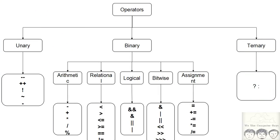Operators are basically classified into three parts: unary, binary, and ternary. Unary basically acts on a single variable, binary acts on two variables, and ternary is a conditional statement.